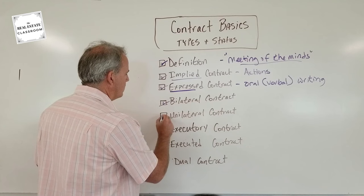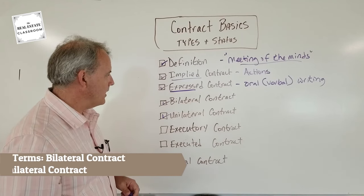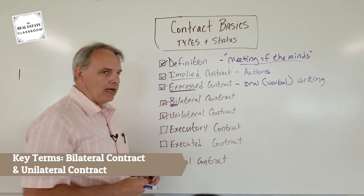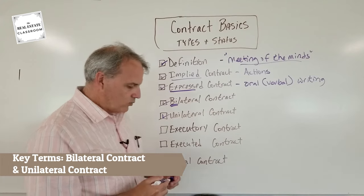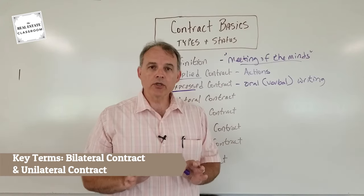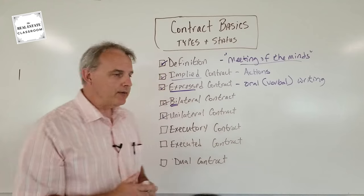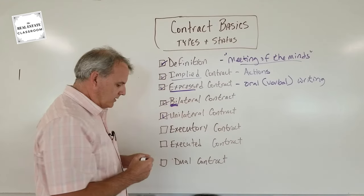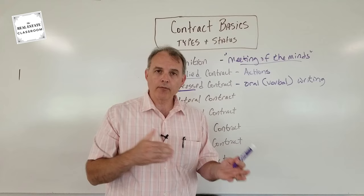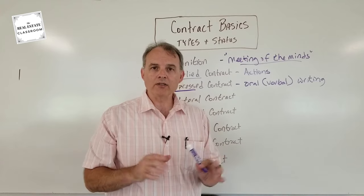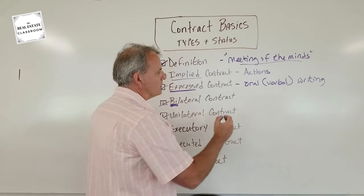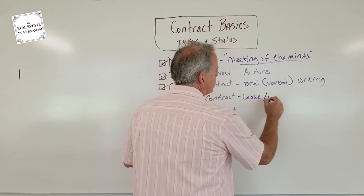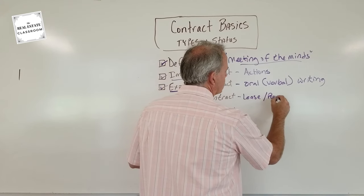Two more concepts you have to know: bilateral and unilateral. Bilateral means binding on both parties once it's agreed to — the way to remember it is 'BI.' Common real estate contracts that are bilateral are the lease and the purchase contract.